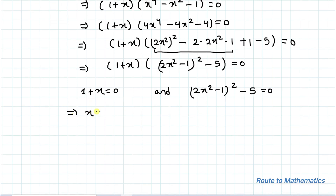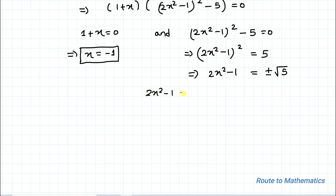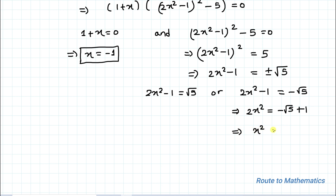From (1 + x) = 0 we get x = −1 as one real solution. From (2x² − 1)² = 5, we get 2x² − 1 = ±√5. Taking the negative case: 2x² = 1 − √5, so x² = (1 − √5)/2. Since this is a negative value, we get no real solutions from this case.